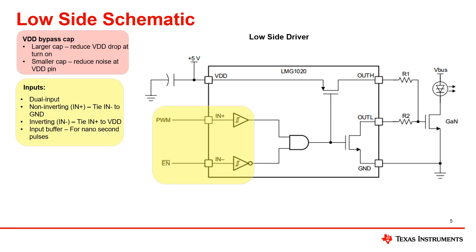Another thing to note is that for high-speed applications, you can use an input buffer. The input buffer will allow you to generate 1 nanosecond pulses. For more information about this, refer to our LMG1020 datasheet or EVM, or you can also watch our related video that goes over this in a bit more detail.